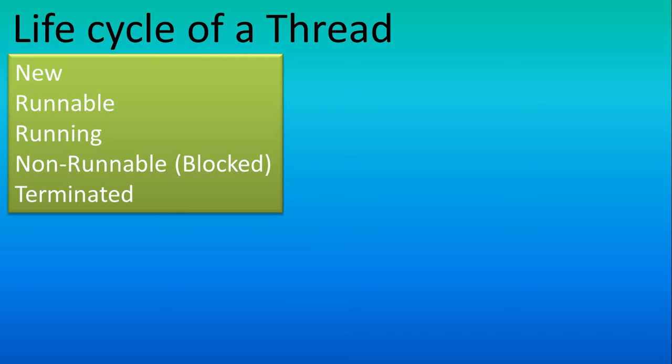In this tutorial we will discuss the life cycle of a thread. The life cycle of a thread means how the thread actually works — from where it starts, how it works, and where it ends. You can say it is the working process of the thread, covering its starting point, middle, and end point.